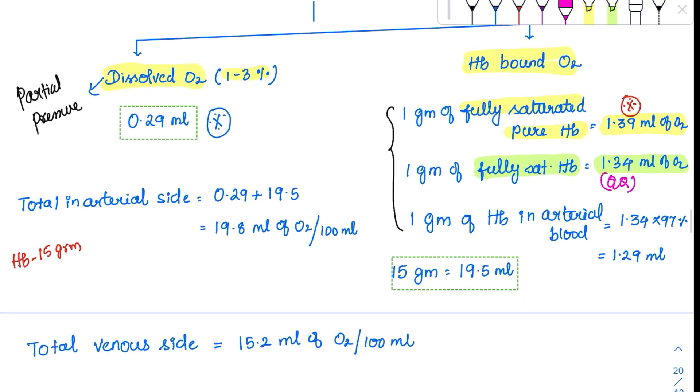But in the arterial blood, it is not fully saturated. Only 97% is saturated. Ideally, 1.29 ml is the one which is carried in 1 gram of hemoglobin in the arterial blood of humans. So for 15 grams, the hemoglobin taking 15 grams is normal, it will be around 19.5 ml. So 19.5 ml is carried in the hemoglobin bound form and 0.3 ml is carried in the dissolved form.